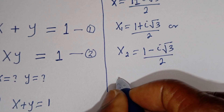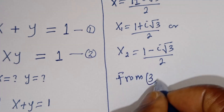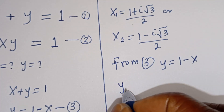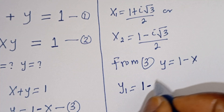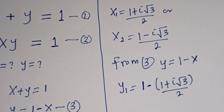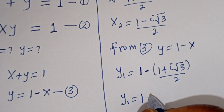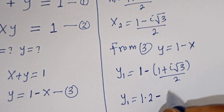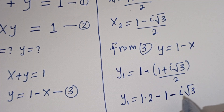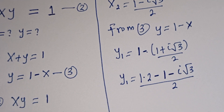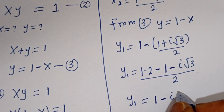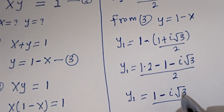We can now solve for y1 and y2. From equation 3, y1 is equal to 1 minus x1, which is 1 minus the quantity 1 plus i root 3 divided by 2. So y1 is equal to 1 minus i root 3 divided by 2.